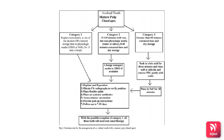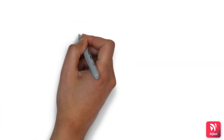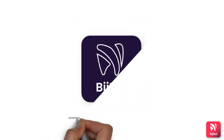Category 3 involves greater than 60 minutes of extra-oral dry time. The tooth is soaked in citric acid for three minutes, rinsed well, the PDL is gently debrided, then placed in sodium fluoride for 20 minutes, replanted, repositioned, a radiograph is taken, a flexible splint is placed, systemic antibiotics are prescribed, and post-operative instructions are provided. With the exception of Category 1, all teeth will need root canal therapy.